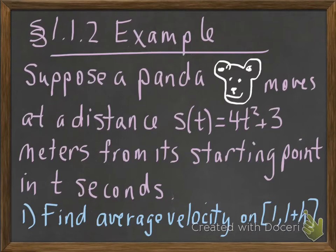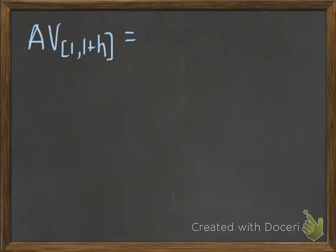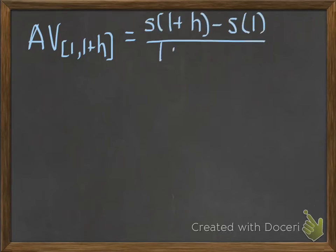To do this, we need to first recall what is the formula for average velocity. Remember, it's change in distance over change in time. So the average velocity on the interval 1 to 1 plus h is going to be s(1+h) - s(1) over (1+h) - 1.